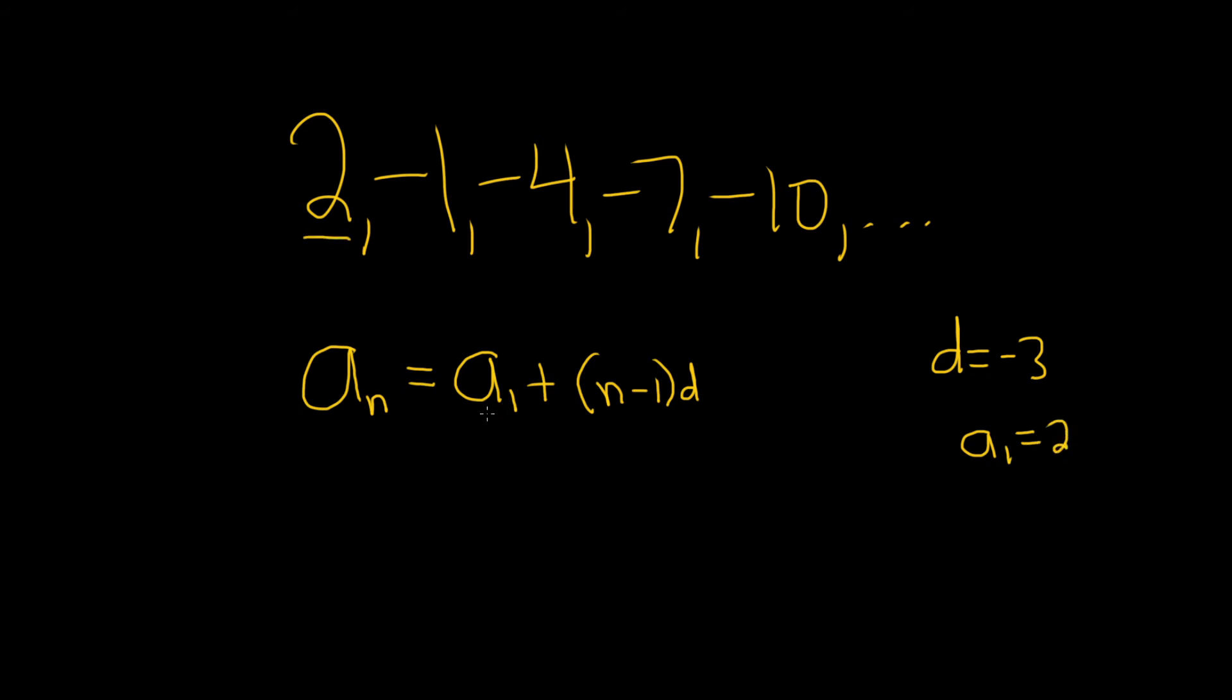So now all we have to do is plug everything into our formula. So a sub n is equal to the first term, which is 2, plus parentheses n minus 1 times d, which was negative 3.